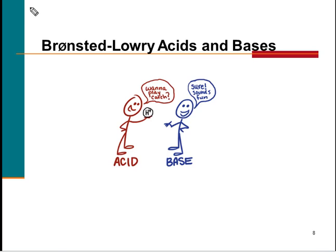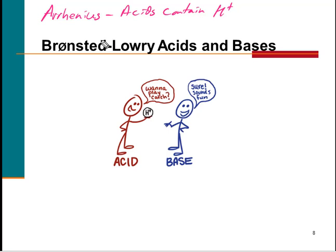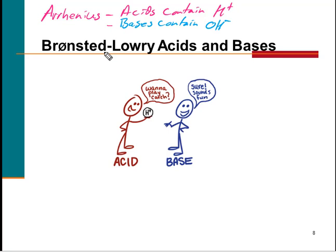Let's review Arrhenius — remember Svante Arrhenius. He said acids contain hydrogen ions, which isn't a whole lot different from what Bronsted and Lowry said. But the main difference is with bases. Bases turn litmus blue. In the Arrhenius definition, bases contain a hydroxide ion, which is very different from the Bronsted-Lowry definition.